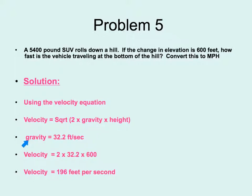So we will use the velocity equation where velocity equals the square root of two times gravity times height. The pull of gravity is a standard of 32.2 feet per second. So our velocity would be 2 times 32.2 times 600. We got this 600 from our problem. We get the velocity as being 196 feet per second. However, we need to convert this to miles per hour. We will continue this problem on our next slide.